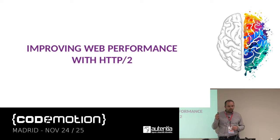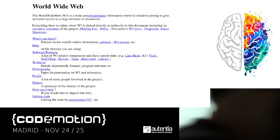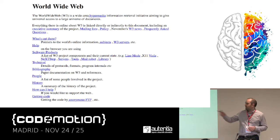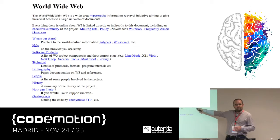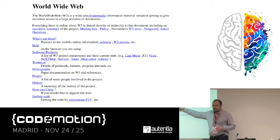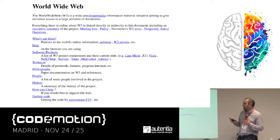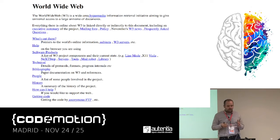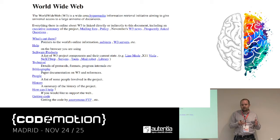How can we improve web performance with HTTP2? I want to show you the first page ever — created at CERN, about 25 years ago. What's cool about this page is it's just HTML, self-describing. All the text and information is inside the same content. It's very small — like four kilobytes. If you even compress it, you can take it down to one kilobyte. On modern networks, it could travel inside just one TCP segment.